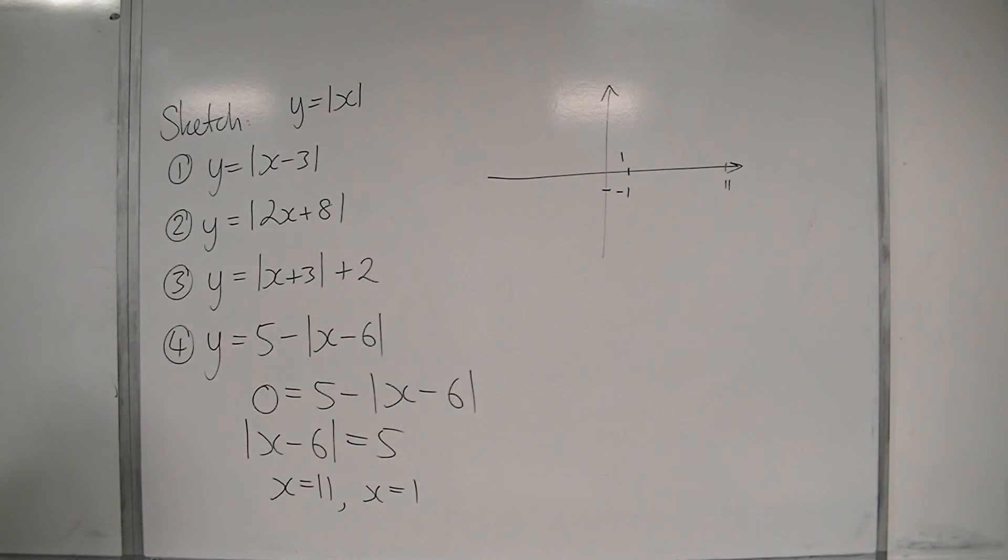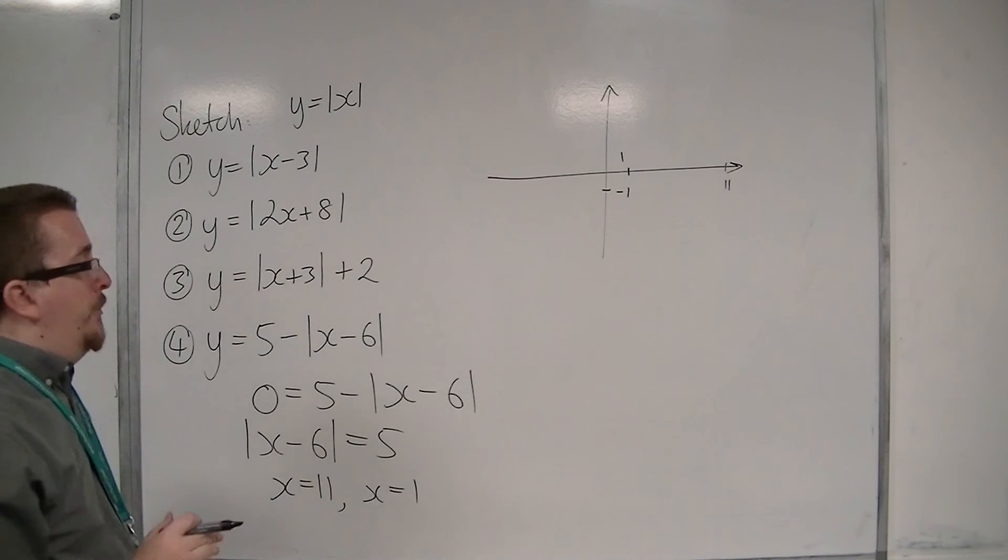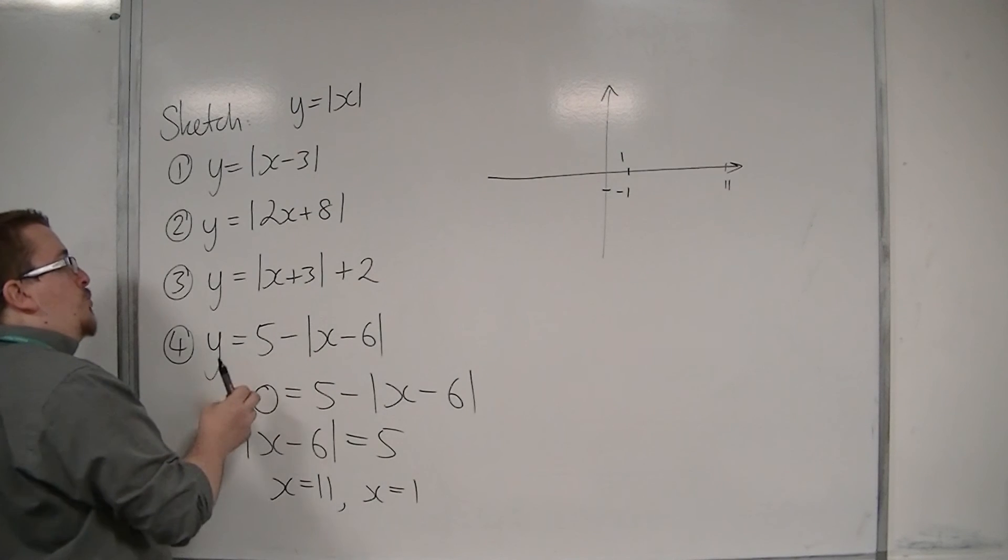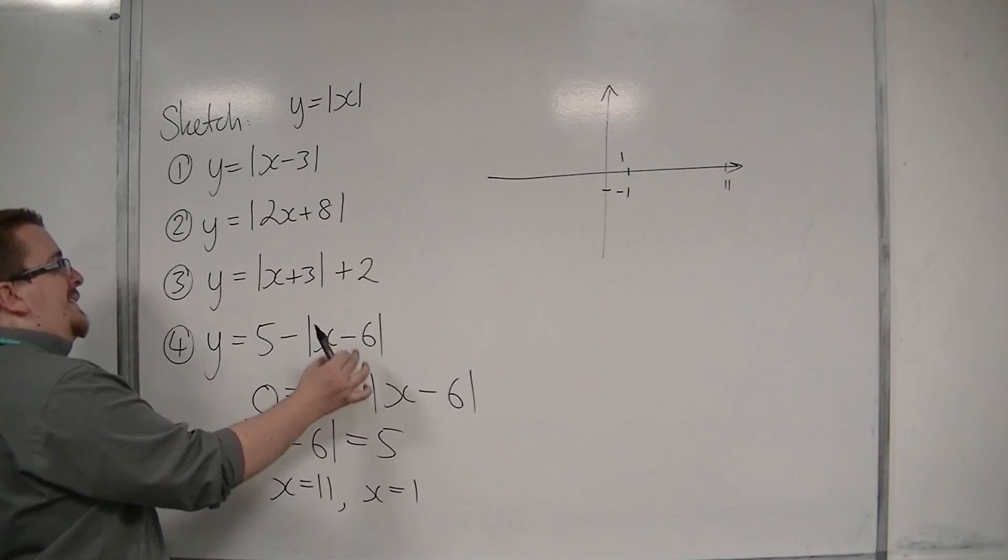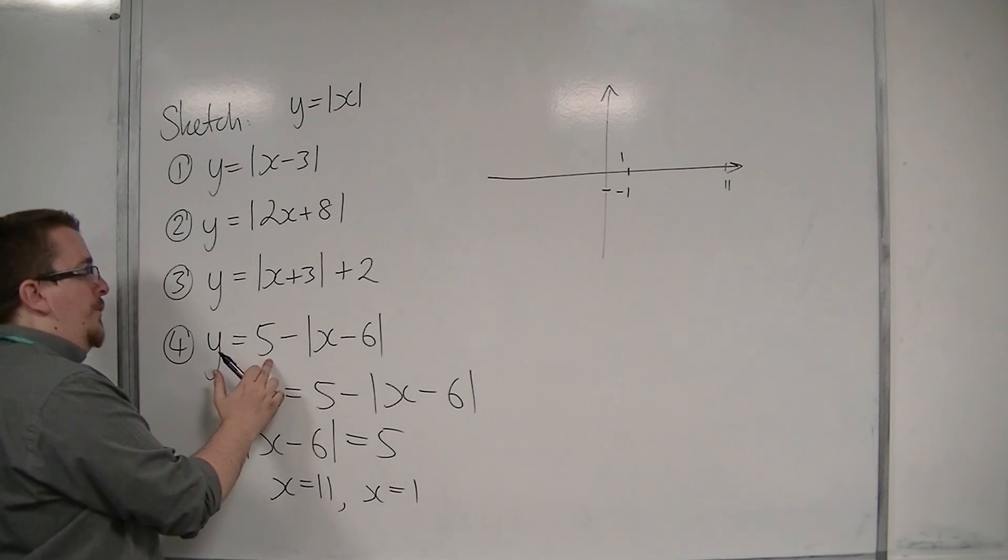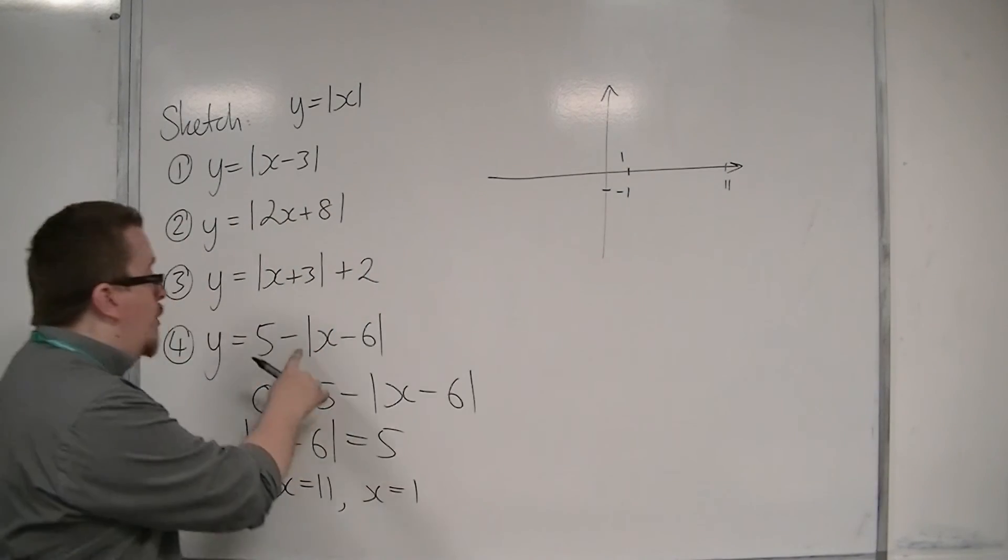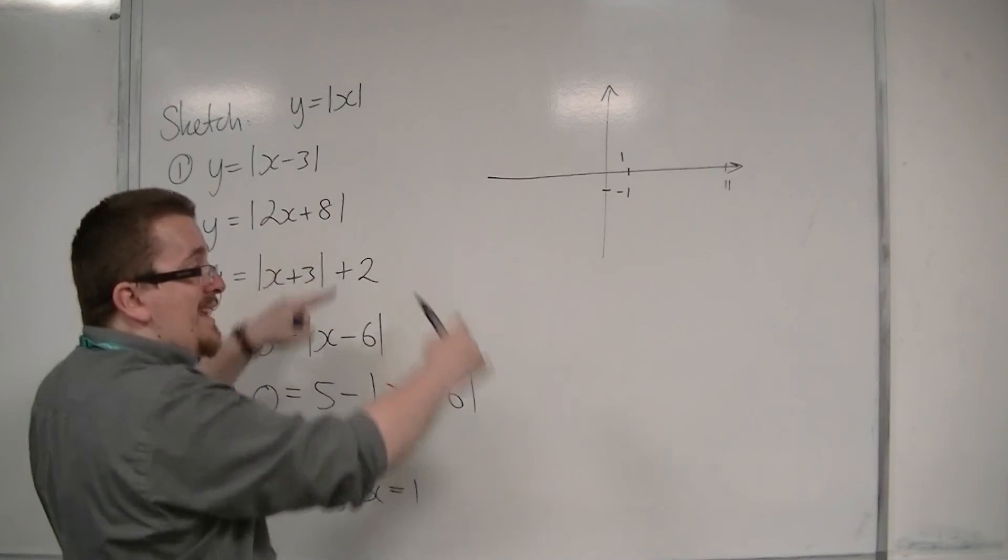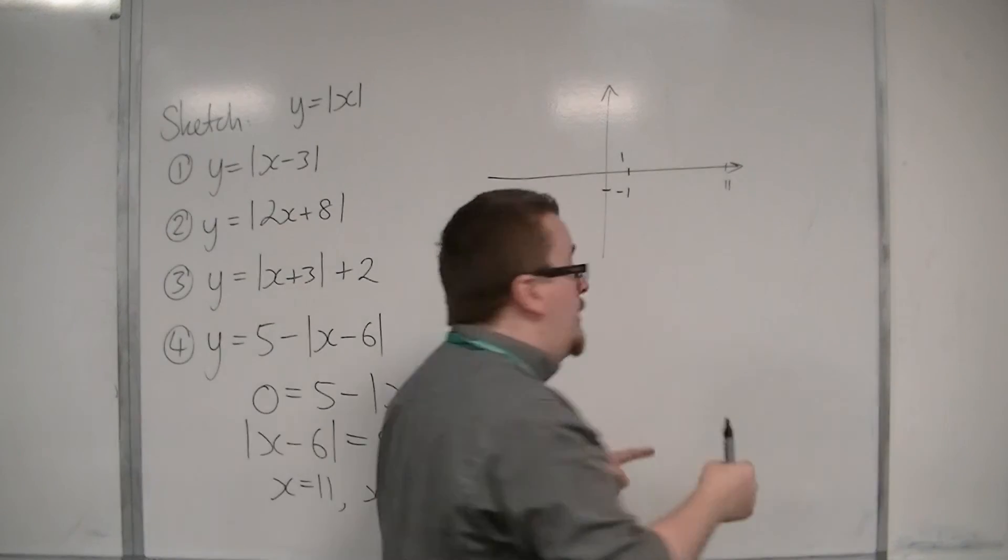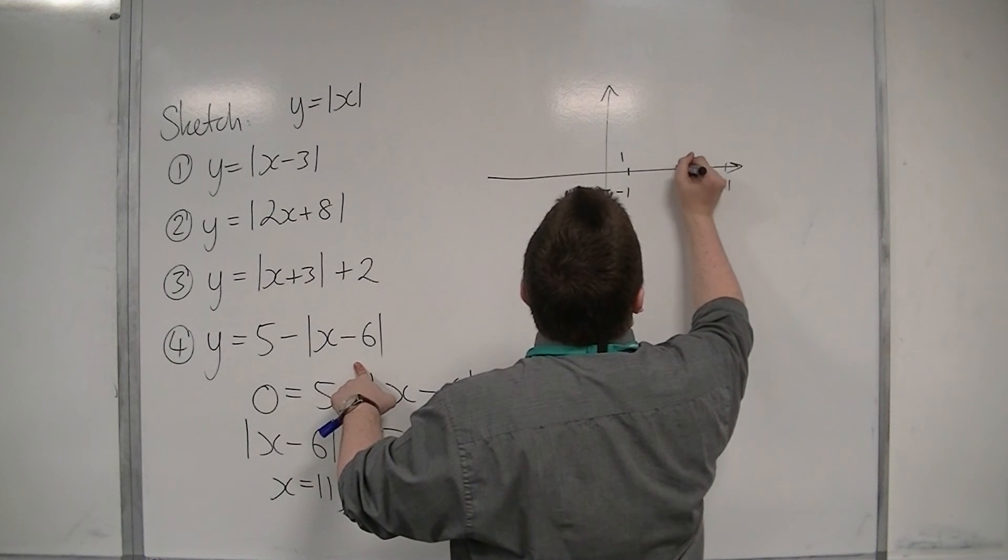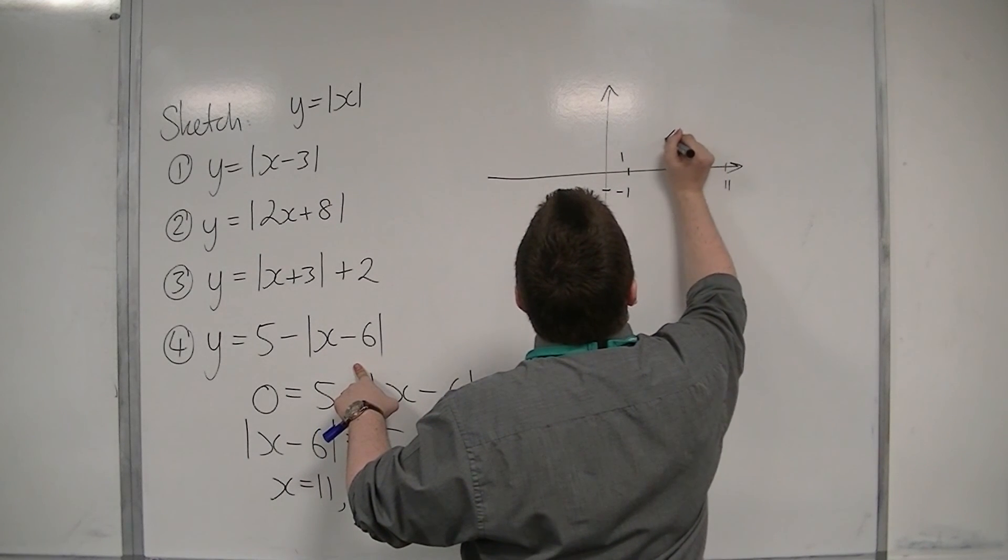We can also use our graph transformations knowledge, because this is a translation by the vector six, five. And the fact that it's a minus outside the modulus sign means that the V is inverted, so there's a reflection going on as well. So six, five, something like this.